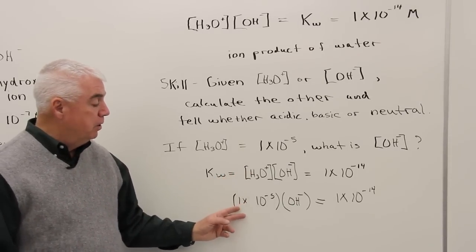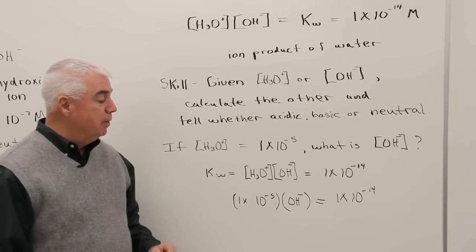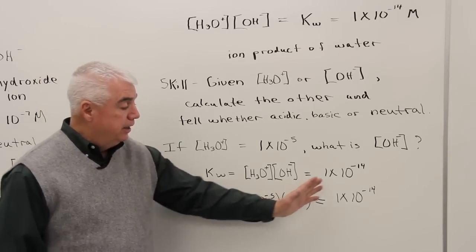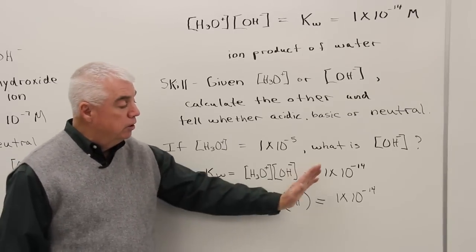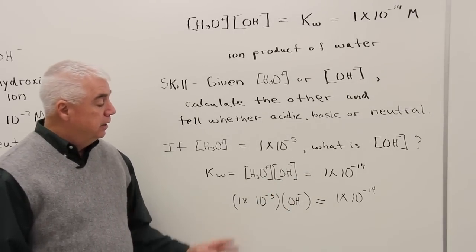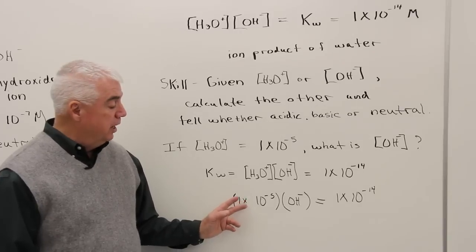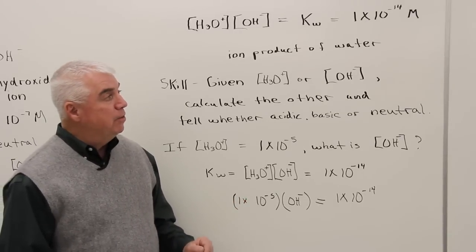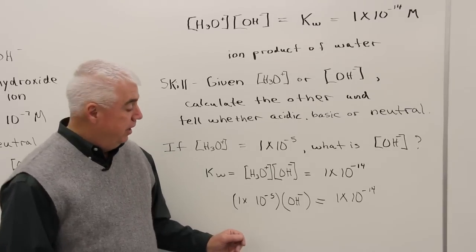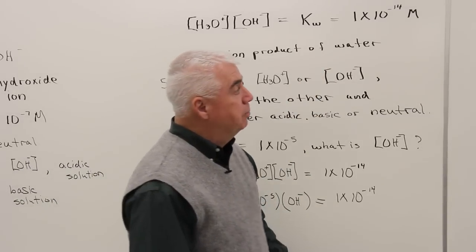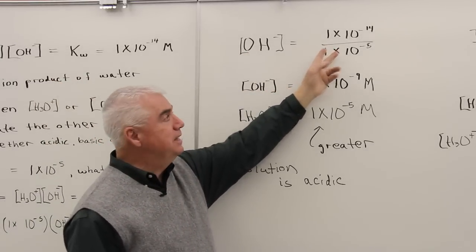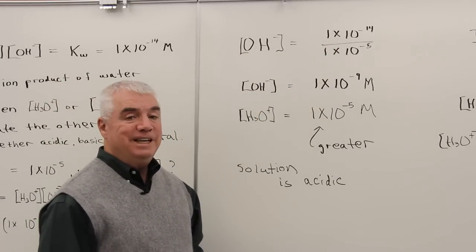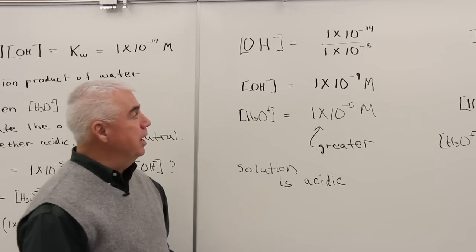For the H3O+, we'd have 1 times 10 to the minus 5, and now our objective is to get the unknown on one side of the equation and all the numbers on the other side. So we divide each side by 1 times 10 to the minus 5th, and that gives us what we've got up here. OH- concentration is equal to 1 times 10 to the minus 14 over 1 times 10 to the minus 5.